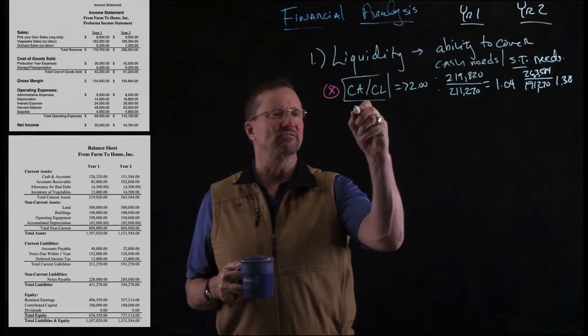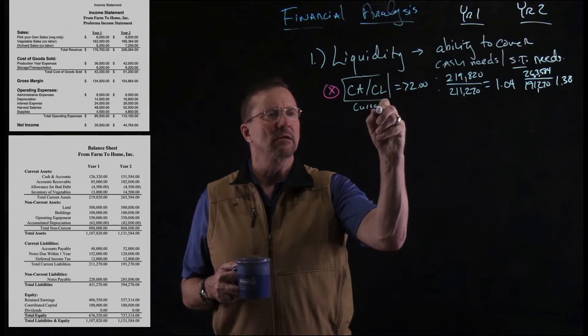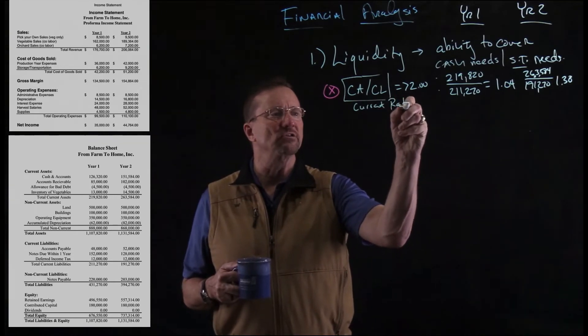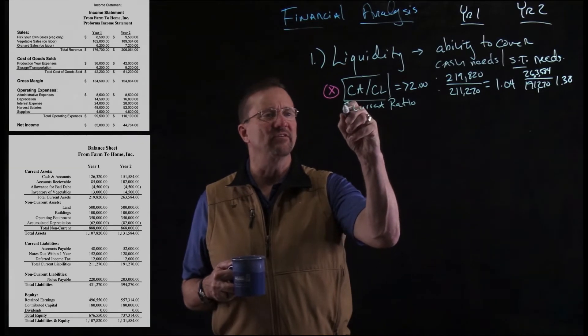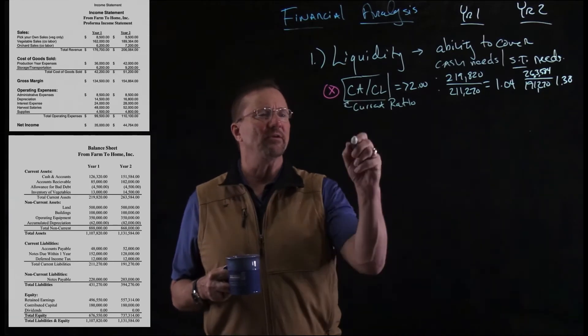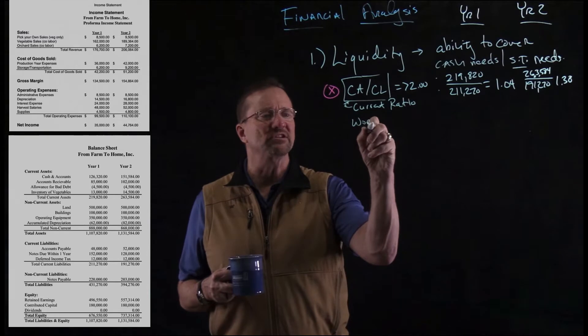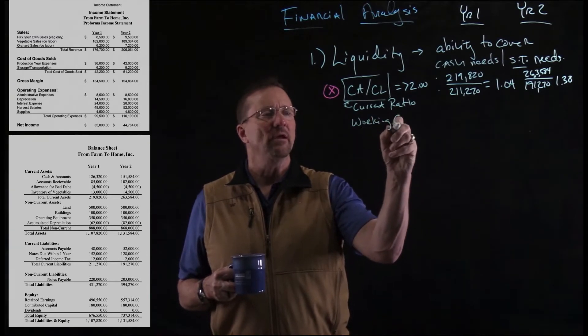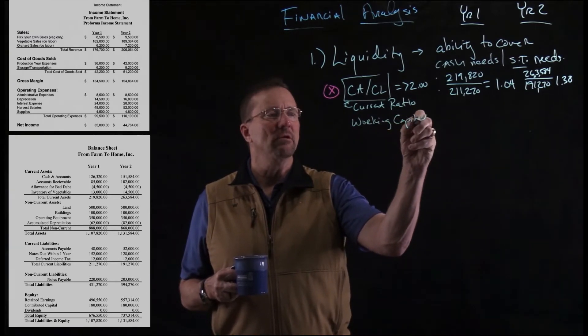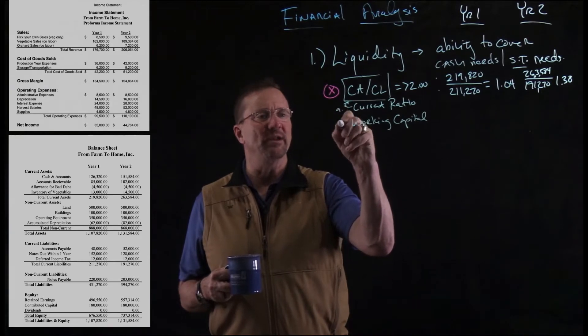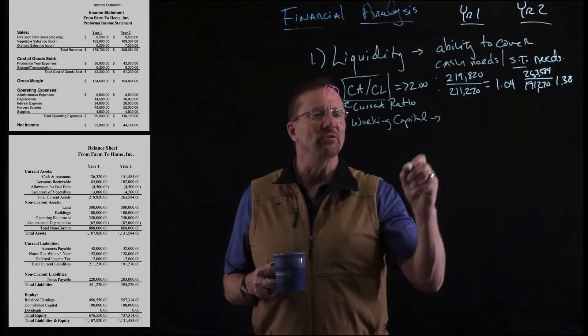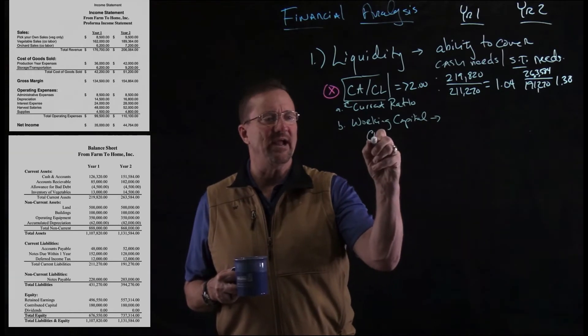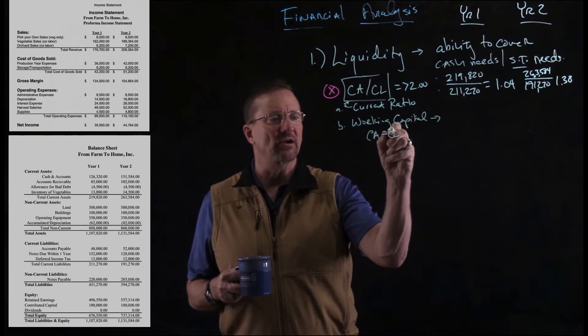Now, another thing about liquidity, it's not just the current ratio. In fact, I should have written what this is. The current ratio is what that is called. We have something called working capital is another way to look at this. And working capital, in fact, let me put in your notes, we'll put A and B, working capital. Working capital is really simple. It's current assets minus current liabilities.